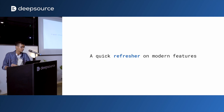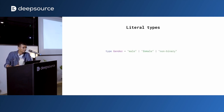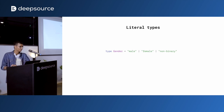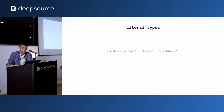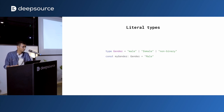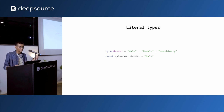We take a quick refresher about some modern TypeScript features, beginning with literal types. So what is a literal type? This is your standard run-of-the-mill type — a gender type which is a union of string literals, so a gender can be male, female, or non-binary. You can have a variable called myGender of type gender, assigned a value called Male — where there's a typo, actually. The first letter is capital; it should not be capitalized.